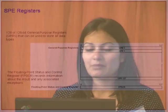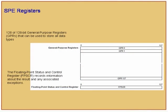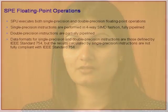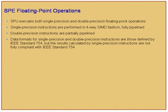The SPU register model is simpler than the PPE register model — 128 registers, they all look the same, unified registers. The same registers are used for floating-point or fixed-point arithmetic. The SPU executes both single-precision and double-precision floating-point operations. Single-precision operations are performed in a four-way SIMD fashion, just like unsigned int or int, and are fully pipelined. Double-precision operations, however, are only partially pipelined.